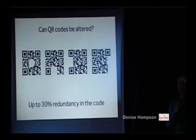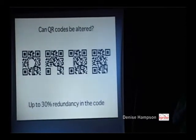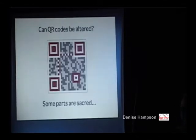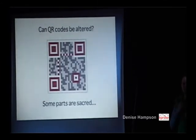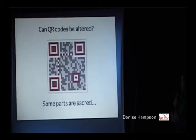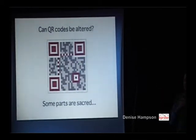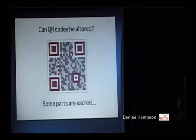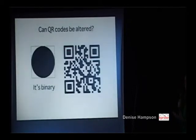QR codes can be awesome — they've got an error correction system. You can actually alter up to 20% of the code, and these four codes shown are the same code and they all scan, even though they've been compromised. However, you have to make sure that certain parts are sacred. The big blocks in the corners and the smaller ones are there for alignment — if you start corrupting those, you lose your scannability. You must make sure they stay in place.